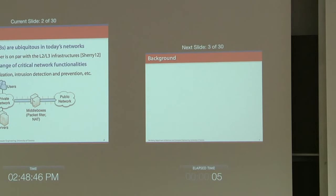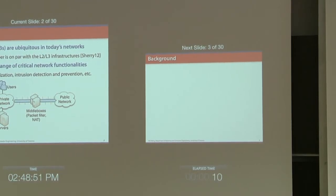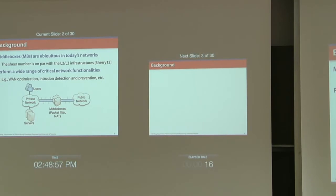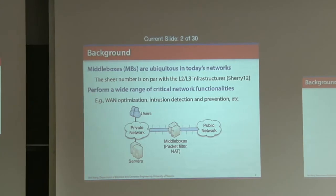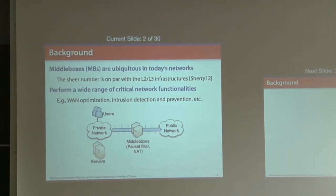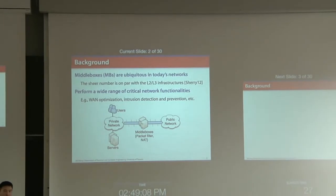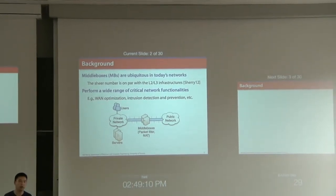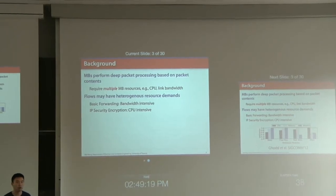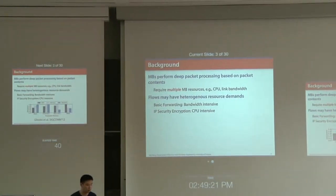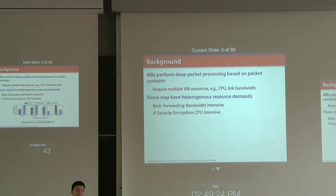Network appliances, or middleboxes, are almost everywhere in today's data centers and enterprise networks. According to some recent reports, the sheer number of middleboxes is already on par with traditional switches and routers. These middleboxes usually perform a wide range of critical functions such as optimization, intrusion detection and prevention, load balancing, and so on. Unlike traditional switches and routers, middleboxes perform deep packet processing based on packet contents.